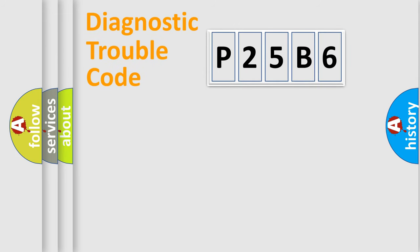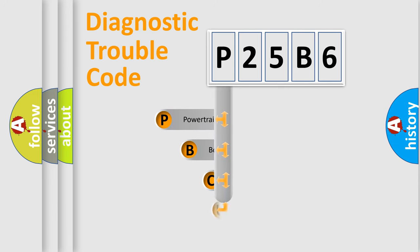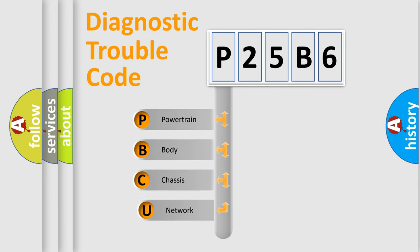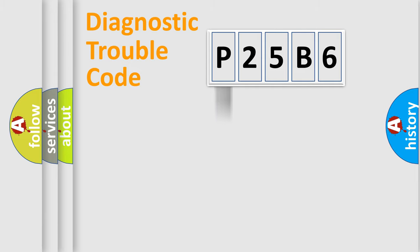Let's do this. First, let's look at the history of diagnostic fault code composition according to the OBD2 protocol, which is unified for all automakers since 2000. We divide the electric system of an automobile into four basic units: Powertrain, Body, Chassis, and Network.